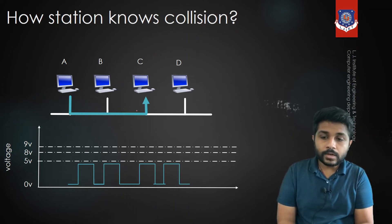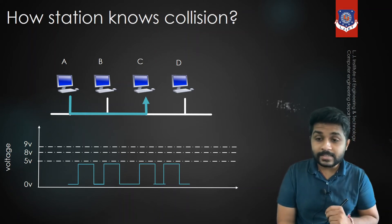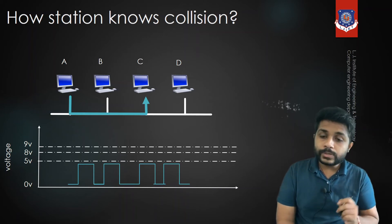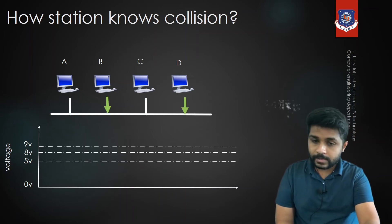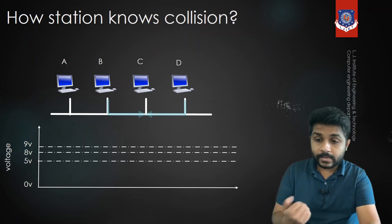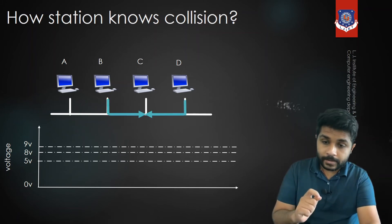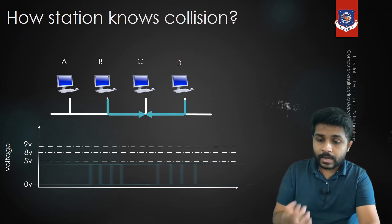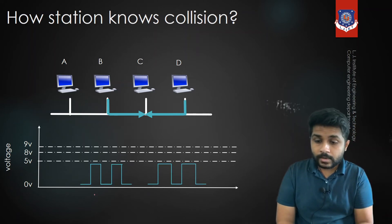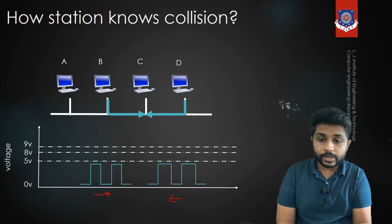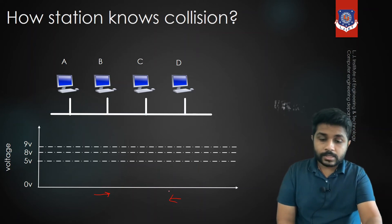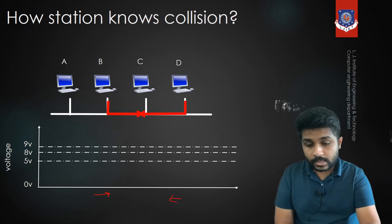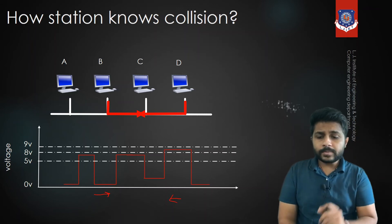Now consider the second situation where B and D want to send data at the same time. They sense the channel, find it idle, and send data. B's signal travels from left to right toward C, and D's signal travels from right to left. After some time these signals collide with each other, and the combined signal changes drastically.